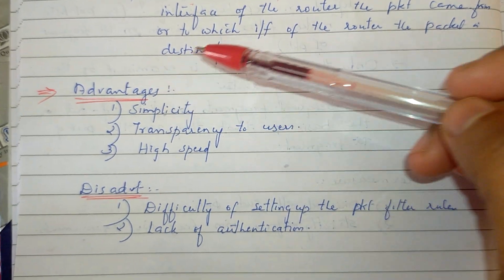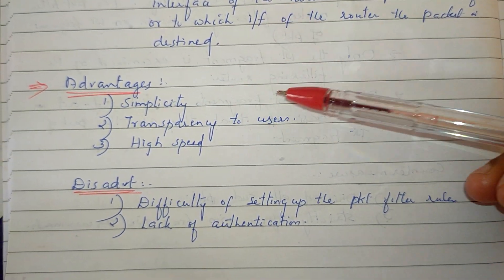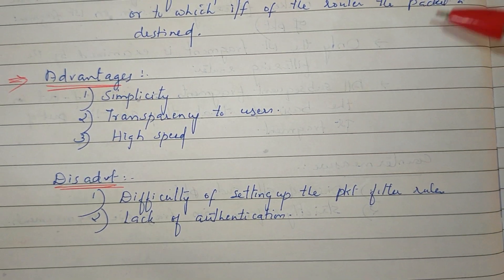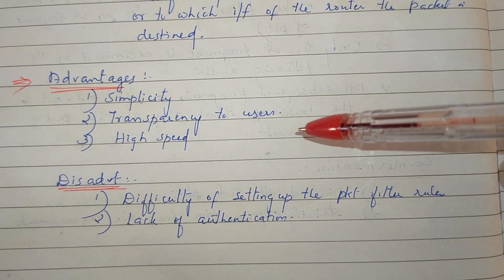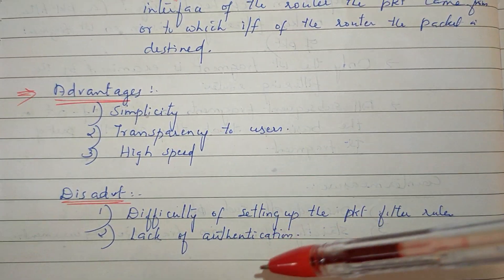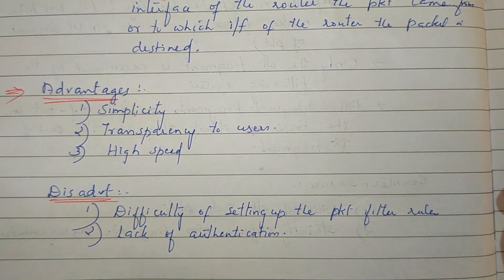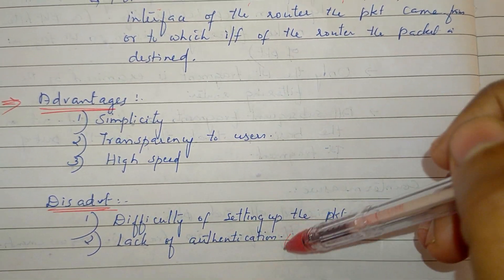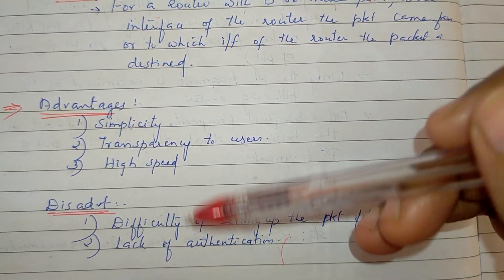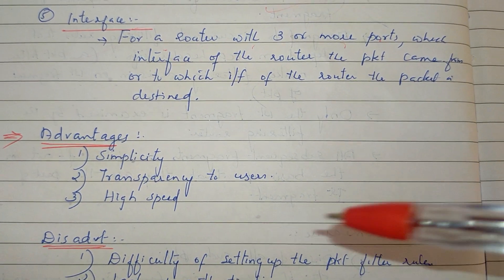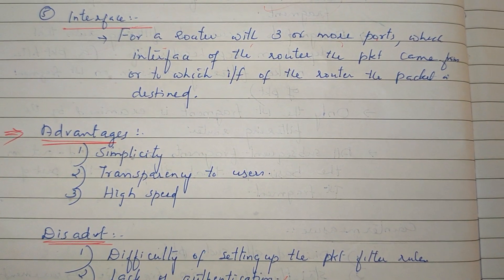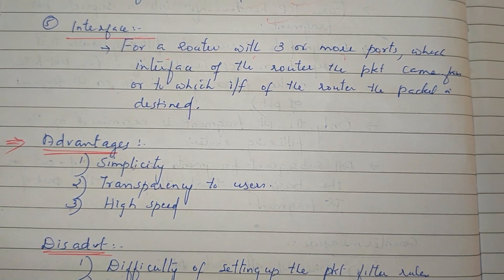The advantages of Packet Filtering Router are that it is simple, transparent, and high speed. The disadvantage is that it depends on the set of rules — if rules are not set correctly, it lacks proper authentication. The next type of firewall is the Application Level Gateway, which will be covered in the next video.